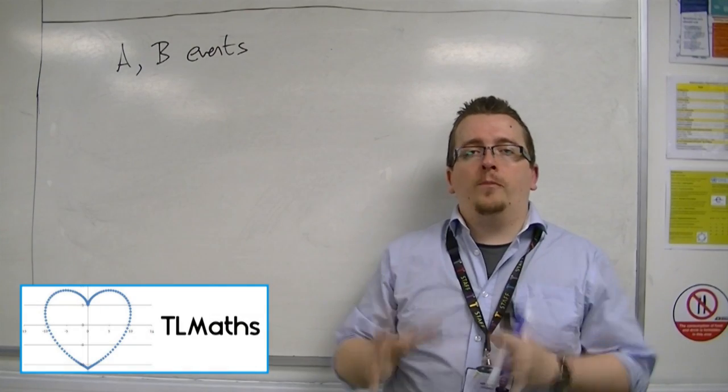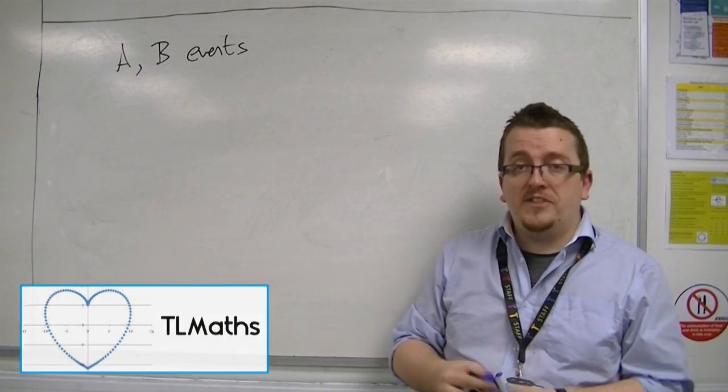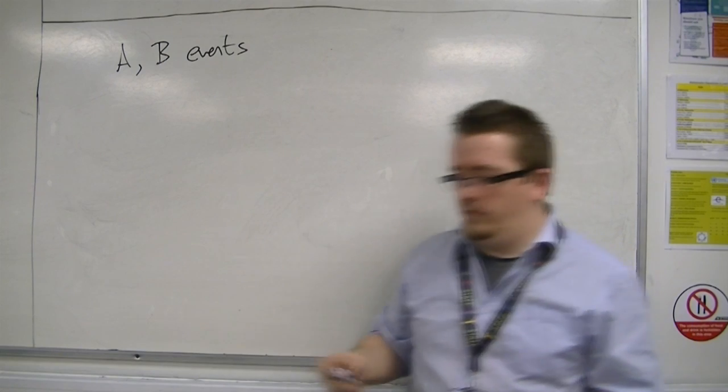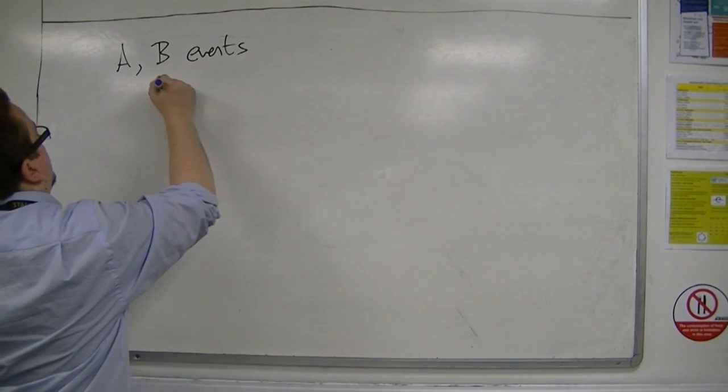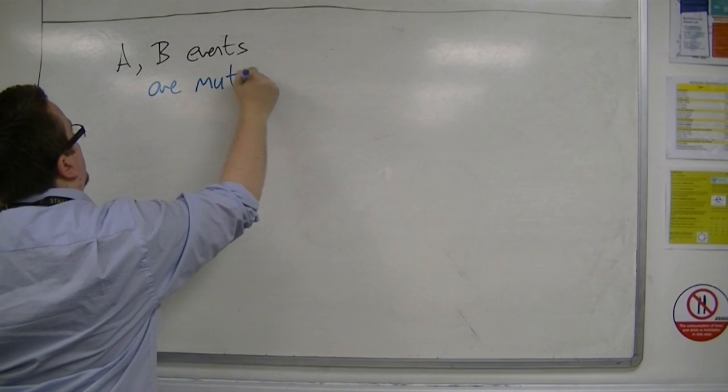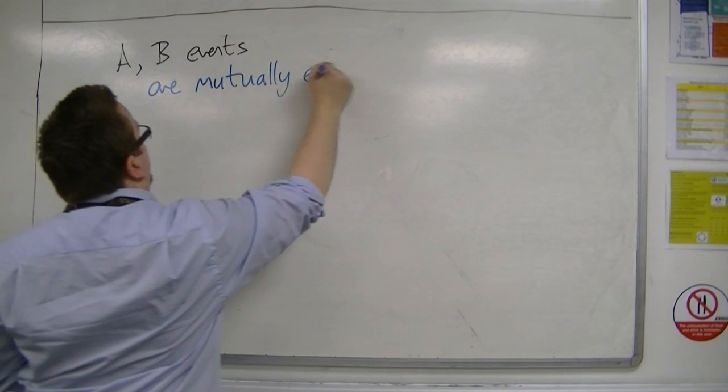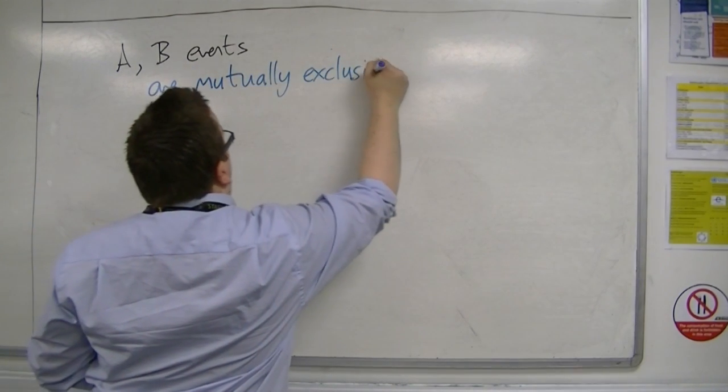In this video I want to explain what it means for two events to be mutually exclusive. So, A and B are events are mutually exclusive if